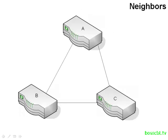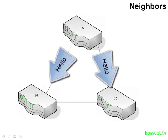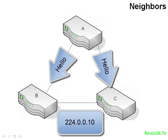Just like OSPF, EIGRP uses the neighbor concept in order to operate. A router will send out a hello message to the multicast IP address of 224.0.0.10 — keep in mind that's a different address than what OSPF uses. Each router doesn't know where its neighbors are, so it sends out the hello message and waits for a reply. This is a dynamic discovery process, just like OSPF.